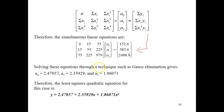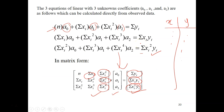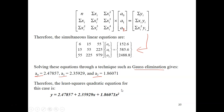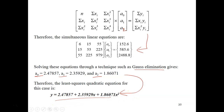With all values substituted, you arrive at the full matrix with all entries known. Solving this using a technique such as Gauss elimination — which you have learned before — gives you the values for A0, A1, and A2. Substituting these into the quadratic equation gives y equals 2.47857 plus subsequent terms, which is your best-fit polynomial equation.